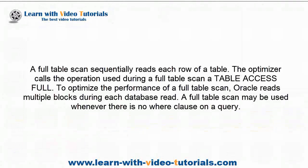A full table scan sequentially reads each row of a table. The optimizer calls the operation used during a full table scan a table access full. To optimize the performance of a full table scan, Oracle reads multiple blocks during each database read. A full table scan may be used whenever there is no WHERE clause on a query.